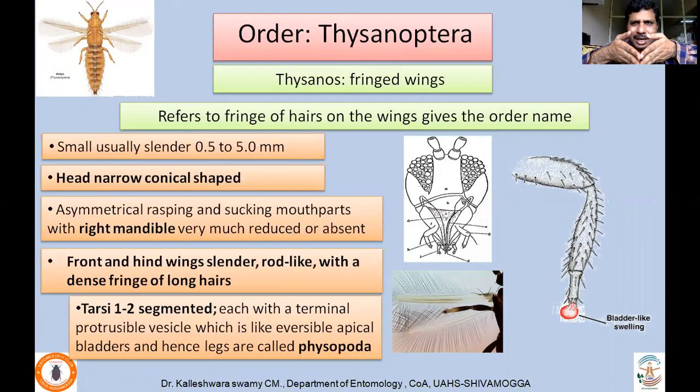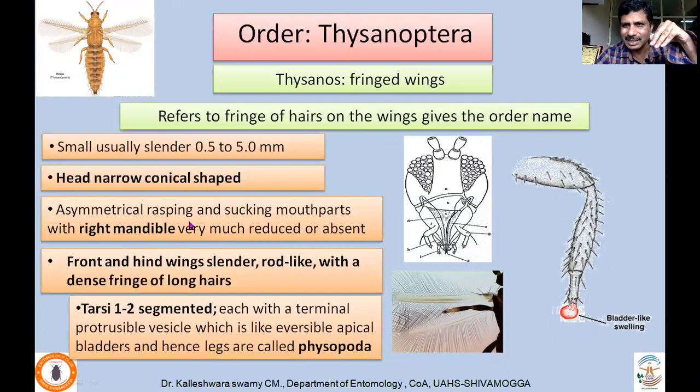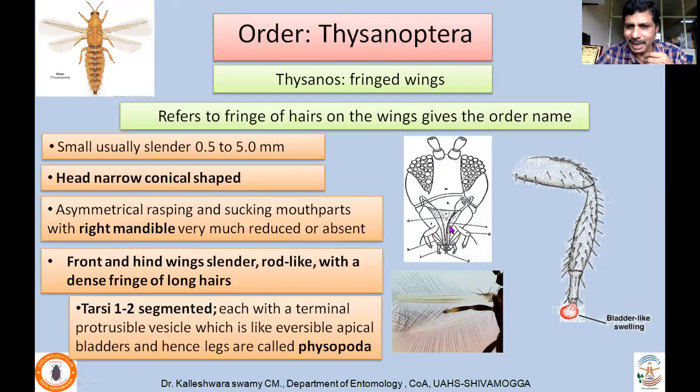A very important characteristic feature of Thysanoptera is that they possess asymmetrical mouthparts, which are of the rasping and sucking type. With three stylets, they scratch the leaf surface and take up the ooze through the conical-shaped mouth. There will be only three stylets: left maxilla and left mandible are present, whereas on the right side only the maxilla is present — the right mandible is absent. This asymmetry is a key characteristic feature of Thysanoptera.